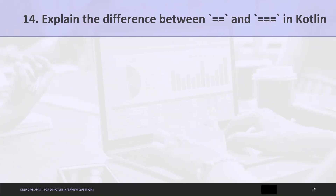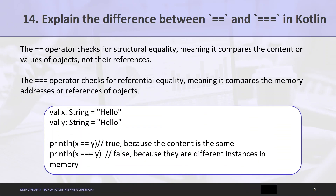Question 14: Explain the difference between == and === in Kotlin. The == operator checks for structural equality, meaning it compares the content or values of objects, not their references. The === operator checks for referential equality, meaning it compares the memory addresses or references of objects. As shown in the given example, x == y is true because the content of x and y are the same, but x === y is false because x and y are different objects.